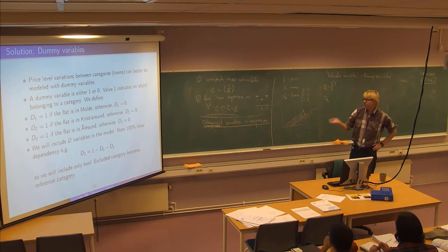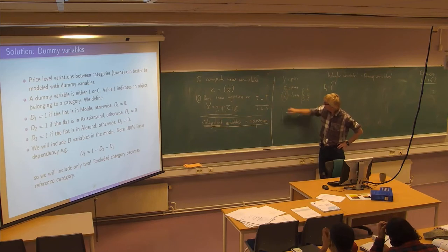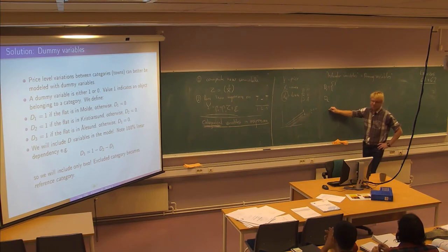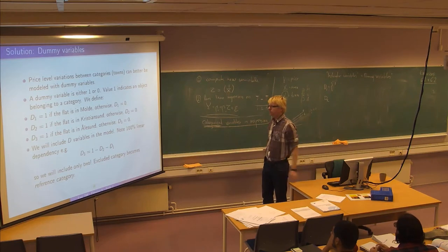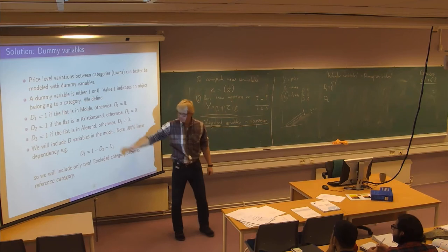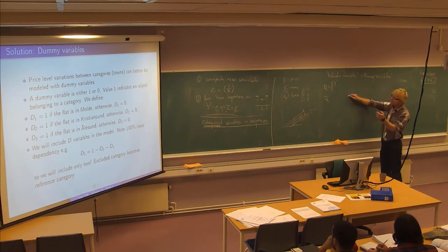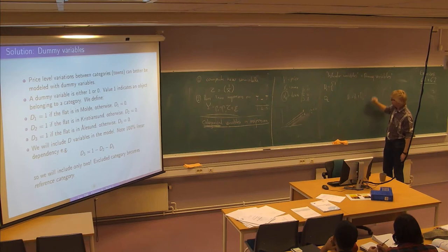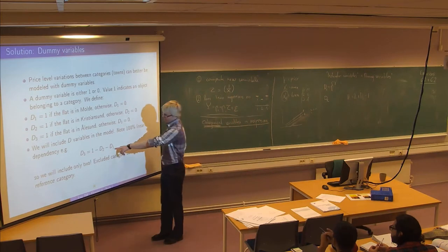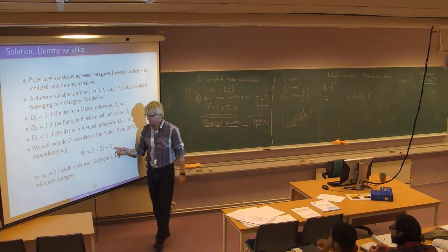What we're going to do is include some of these dummy variables instead of the categorical 1, 2, 3 variable. The first idea is to throw in all of them, but you see that these are not independent variables. Since they indicate each of the towns, one of them is always one and the others zero, so their sum is always one. That means D3 can be expressed as a perfect linear function of the two others.